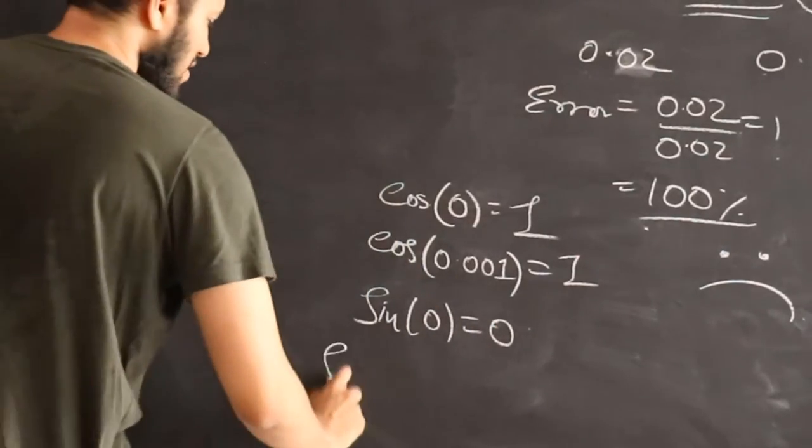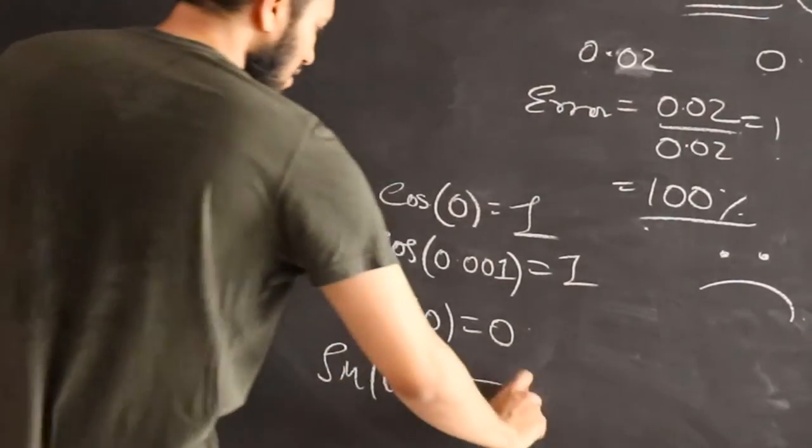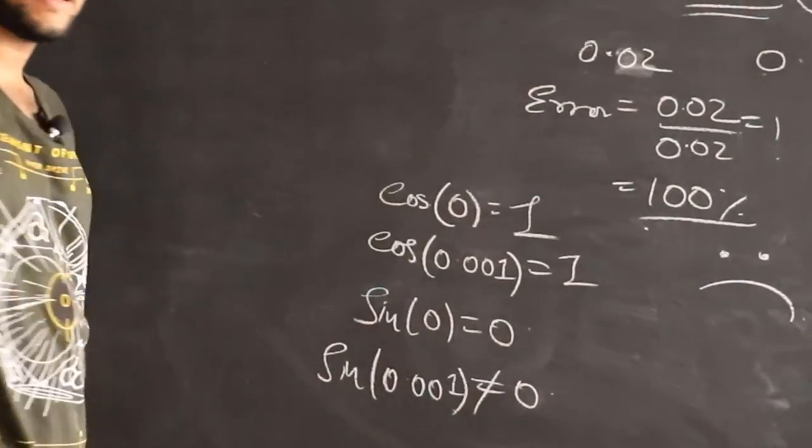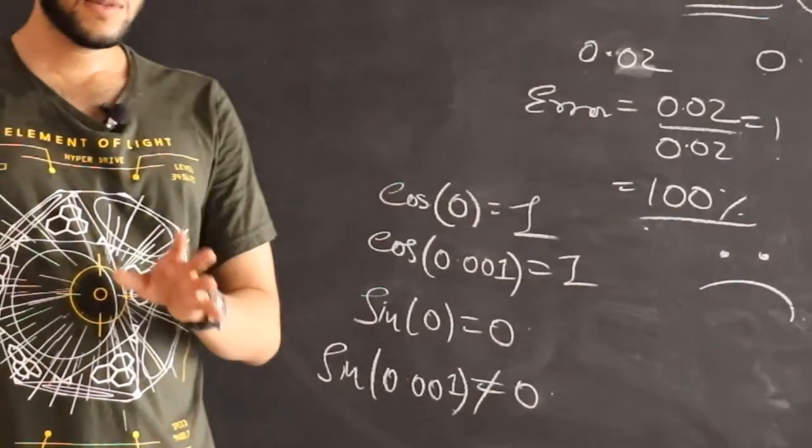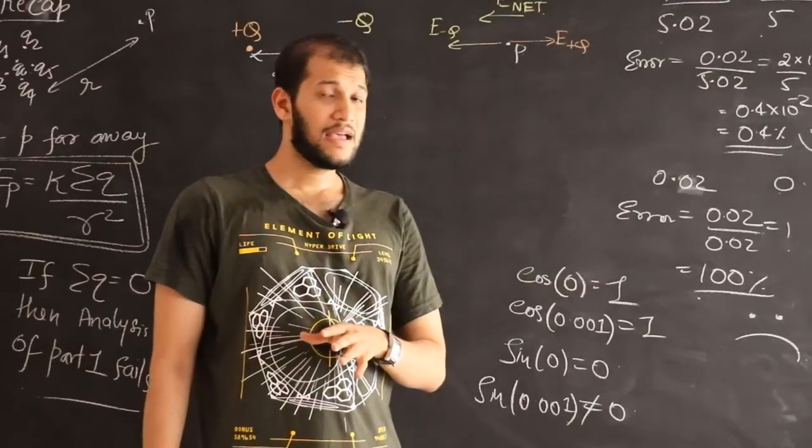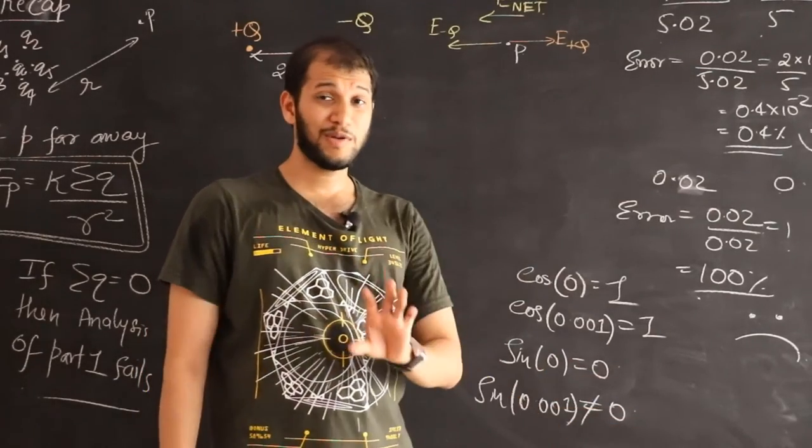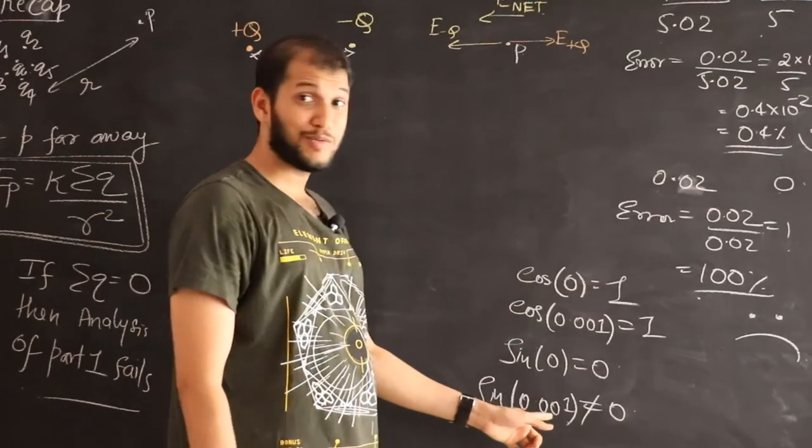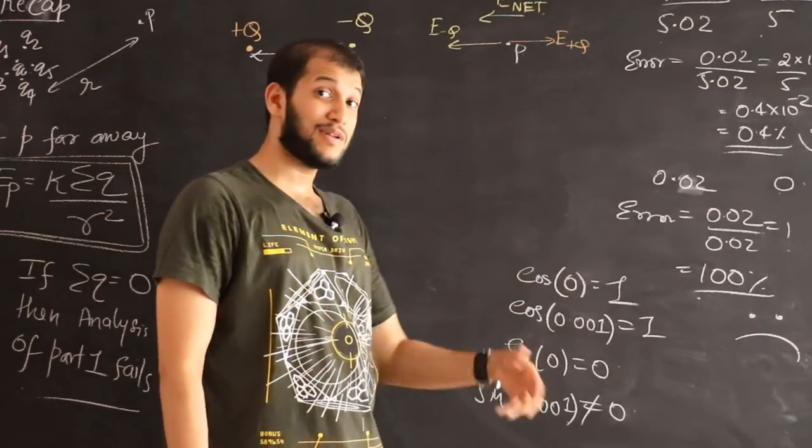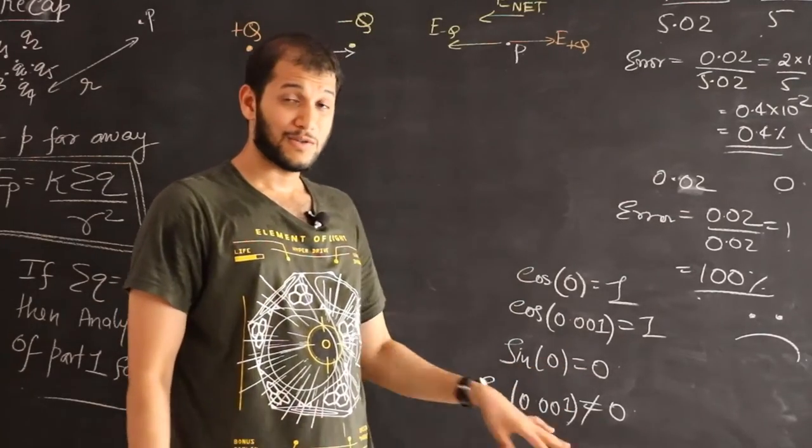But if I ask you what is sin of 0.001, you can't call it as 0. You can't approximate as 0. Because sin of 0.001 is going to be a very tiny number. And you cannot approximate the tiny number to 0 because the moment you do that, you're getting a 100% error. Of course, we have learnt, you must have learnt that sin theta approximates to be theta in radians when theta is very small. So that's the simple idea.